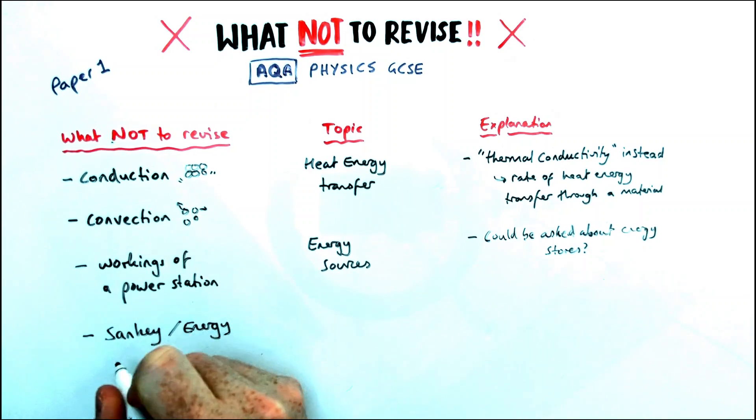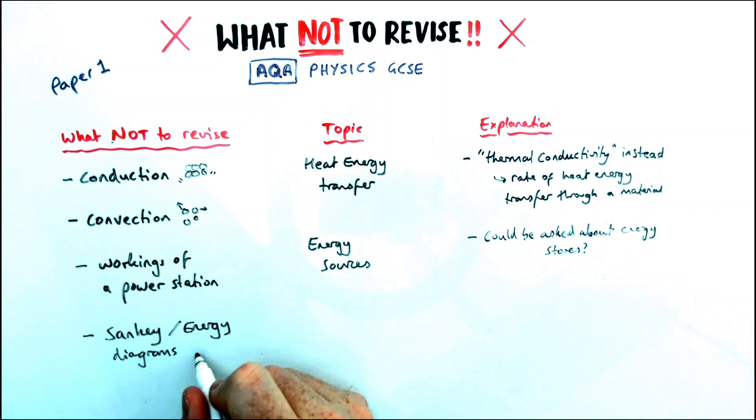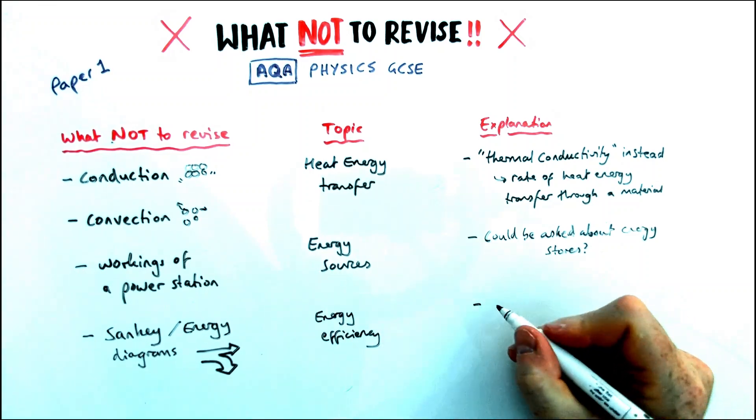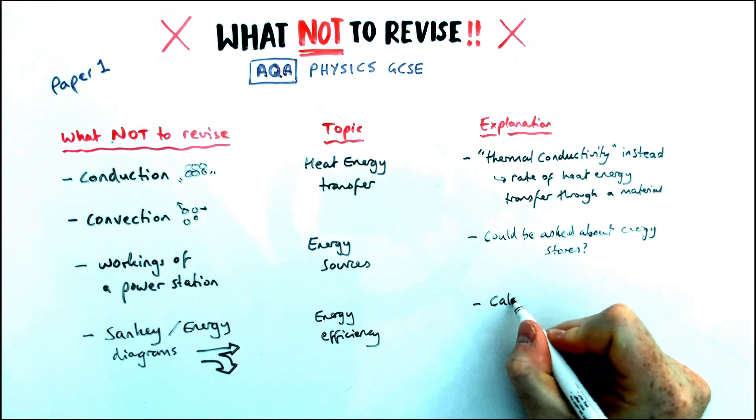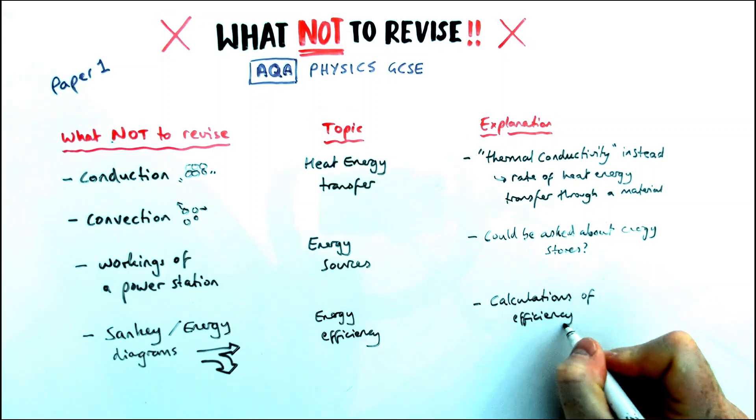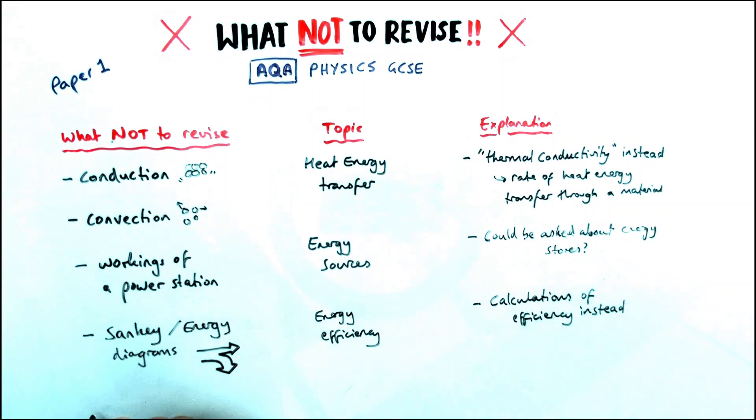Sankey and energy diagrams is something that is on other exam boards, but is not on AQA. They look a bit like this, where you've got an amount of energy in, an amount of energy out, and usually some of that is wasted as well. You could be asked to calculate using the number of squares in the diagram. Instead, the AQA exam board asks you to calculate efficiency, but not use these specific energy or Sankey diagrams.